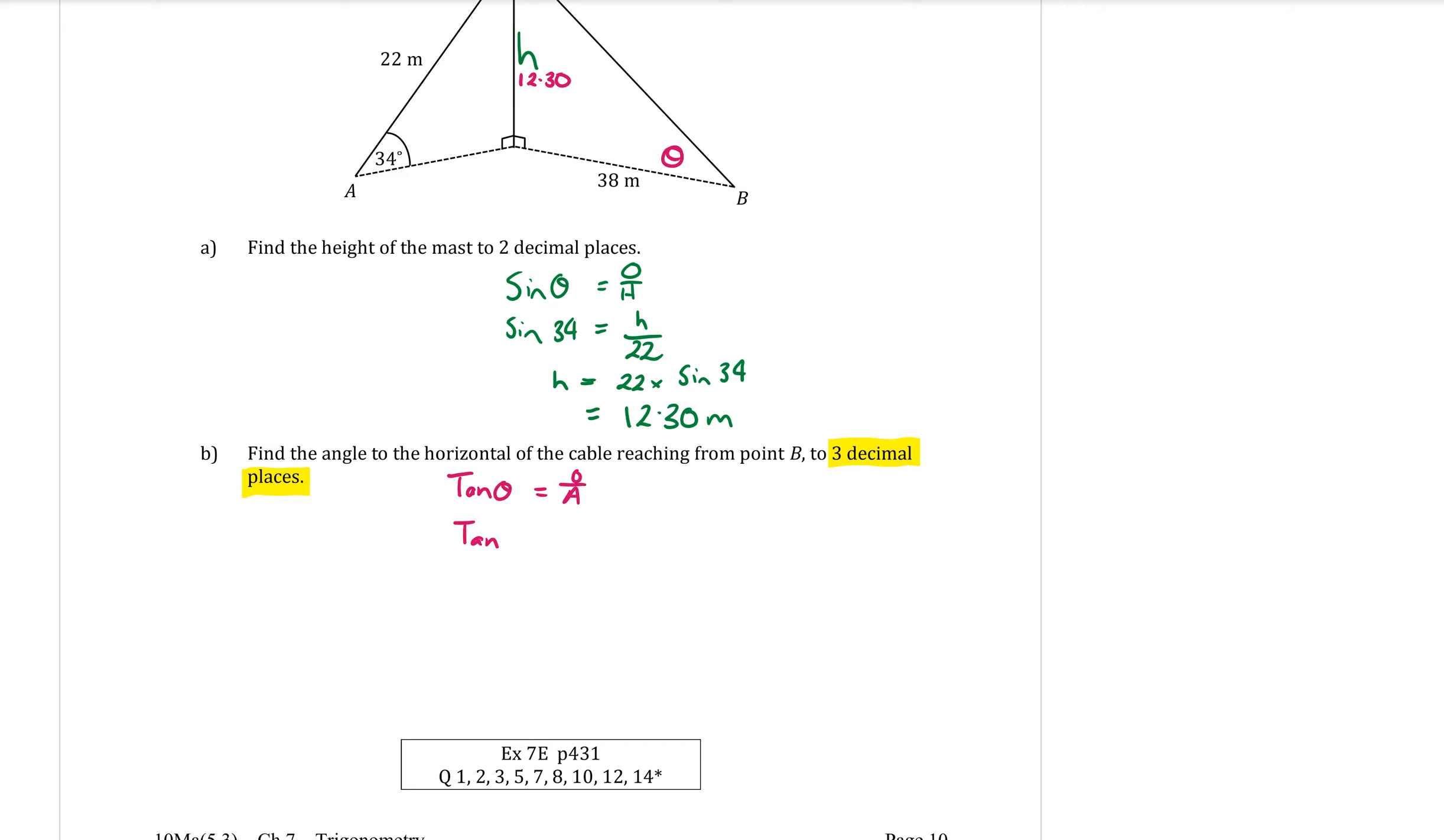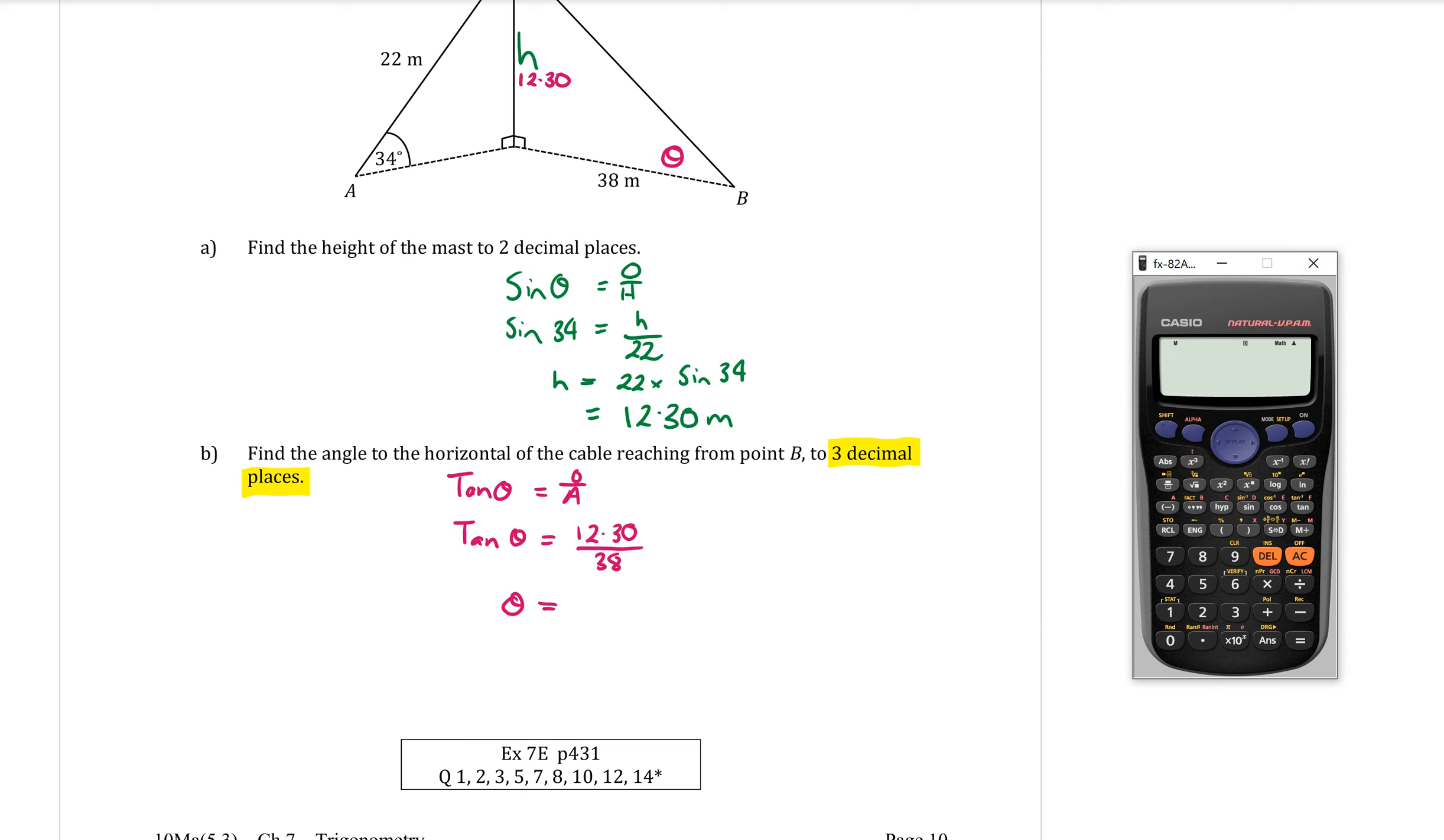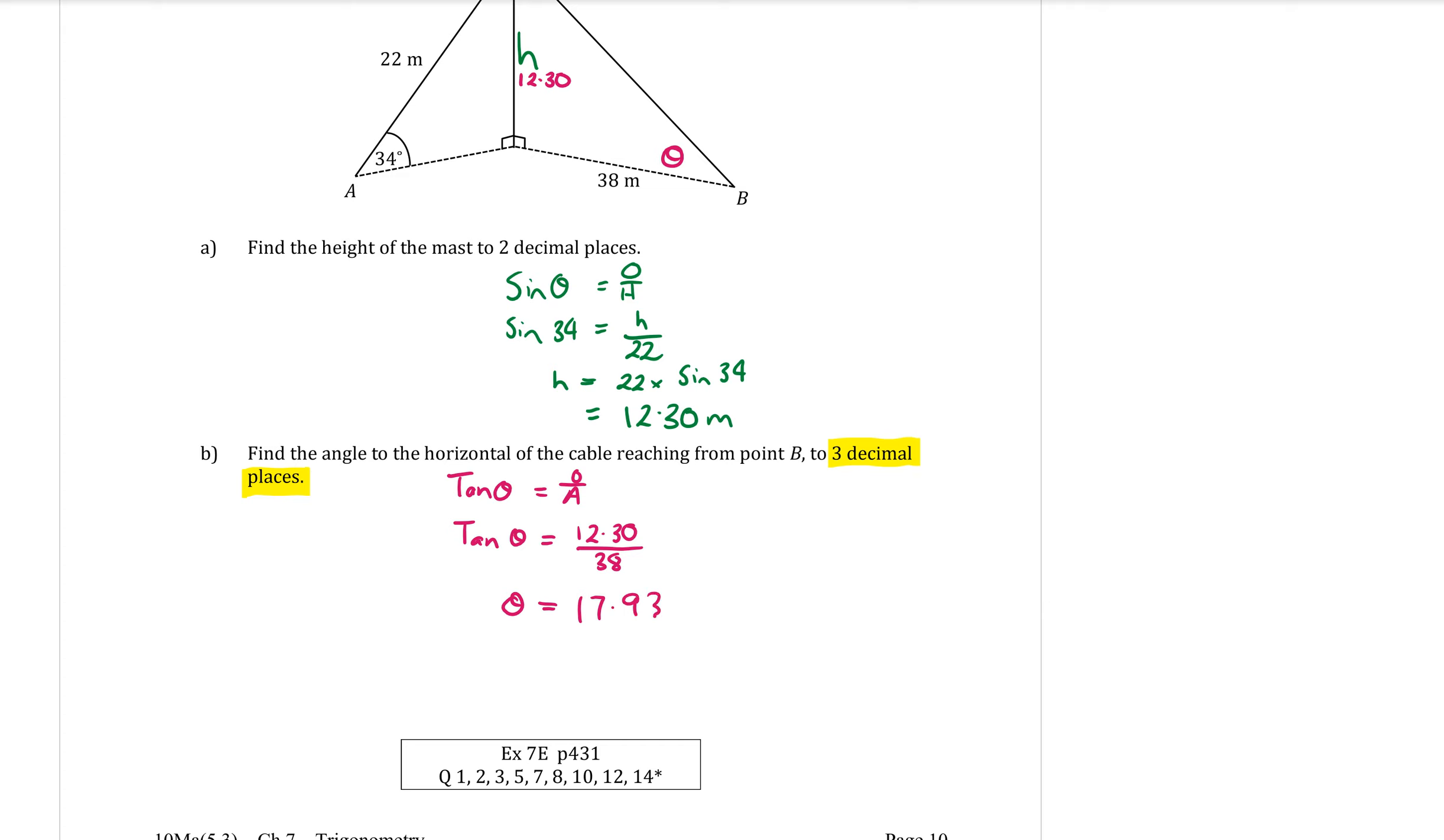Tan theta equals opposite over adjacent. Substitute into the formula. Tan theta equals opposite is 12.30. The adjacent is 38. Then because we're finding an angle, we need to do inverse tan of that fraction. So in your calculator you press inverse tan, fraction button 12.3 over 38, and press—oops, close the bracket—press equals. Okay now it does say that it wants it in decimal places. So you're not going to degrees and minutes or anything else. In decimal places that is 17.93 and we'd round that to 6. 17.936 degrees.